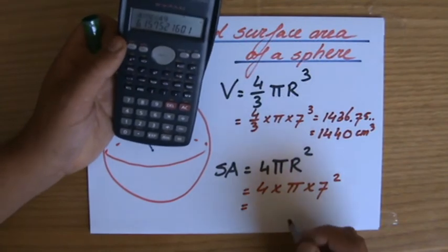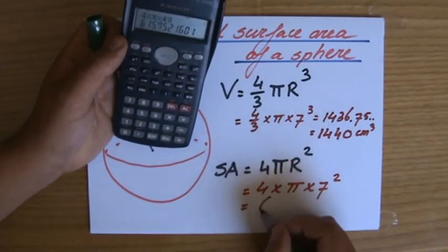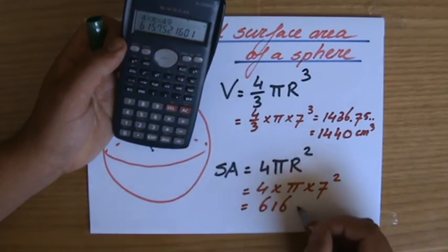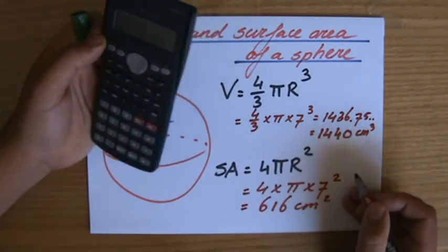And that to three significant figures, I am going to round it straight away, is 616 centimeters squared. I should do it properly then.